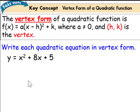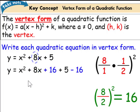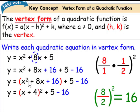Let's write each quadratic equation in vertex form. First, let's take a look at the b term. We will take half of b and square it. This gives us 8 over 2 squared, which is 4 squared, which is 16. We are going to add and subtract 16. When we add and subtract the same number, we are essentially adding 0, which won't change the equation. Now we can see that we have a perfect square trinomial. We will factor that, giving us x plus 4 squared. 5 minus 16 is 11. We are in vertex form.